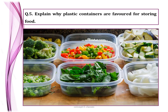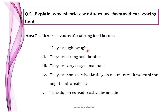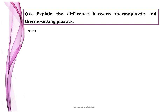Question number five: why are plastic containers favored for storing food? In homes, food items such as vegetables, fruits, leftovers, masalas, and oil are stored in plastic containers. We prefer plastic containers because they are lightweight, strong and durable, easy to maintain, and non-reactive — they do not react with water, air, or any chemical solvent. Whatever is stored inside does not react with the plastic, and plastics do not corrode easily like metals.